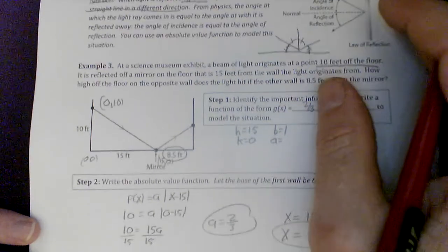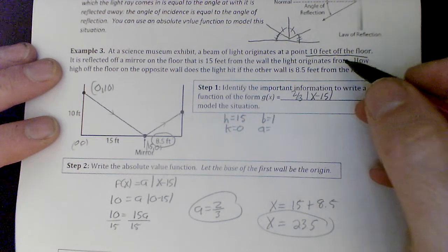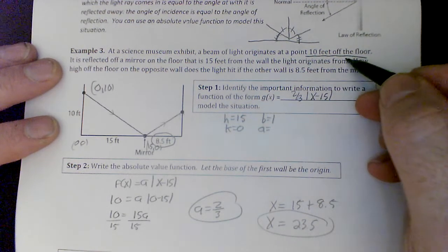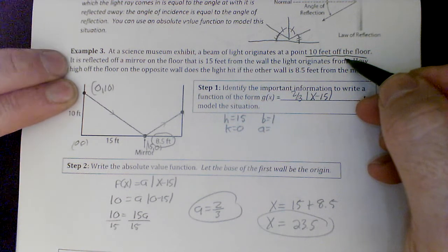So here this is, and I'm just going to talk you through what I had written. You can pause as much as you want. At the Science Museum, a beam of light originates 10 feet off the floor, which we have here, the (0,10), is reflected off a mirror.